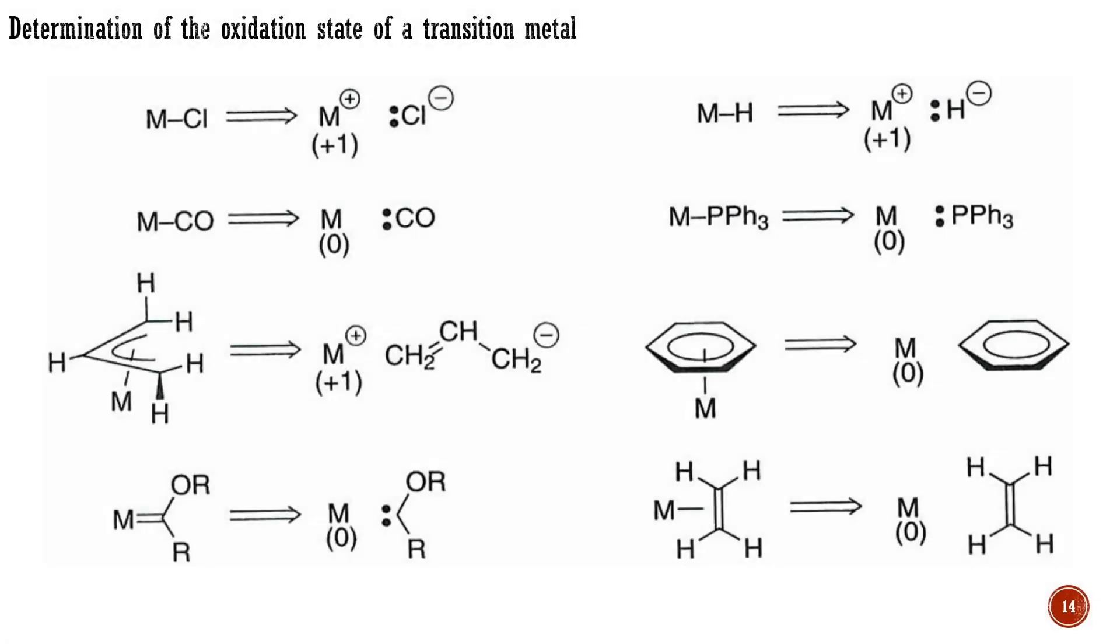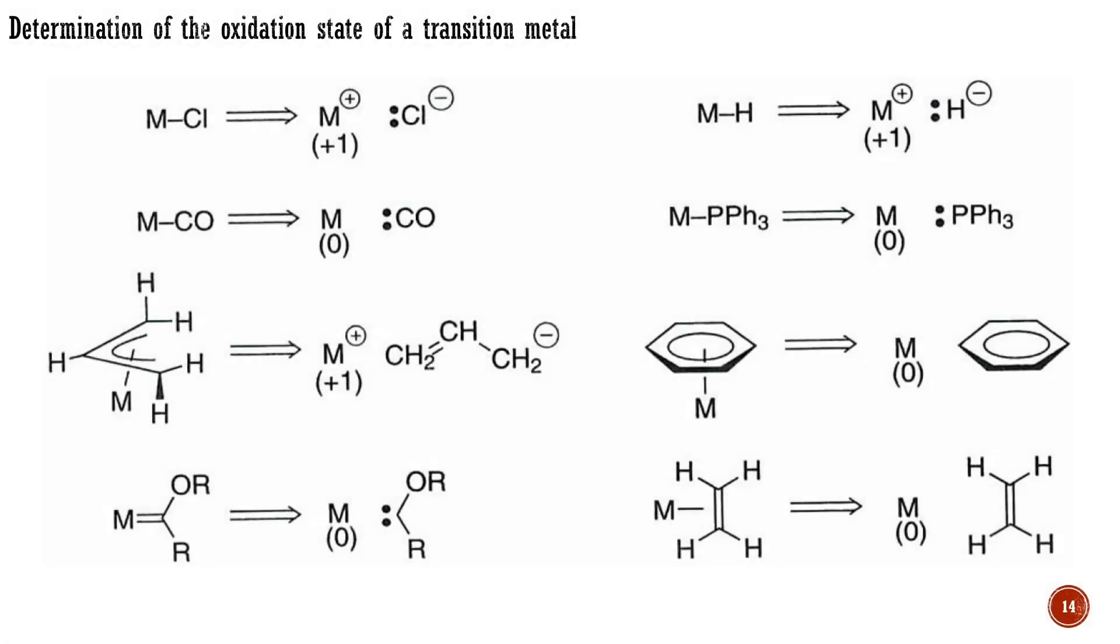The oxidation state of a metal is defined as the charge left on the metal atom after all ligands have been removed in their normal, closed-shell configuration, that is, with their electron pairs. The oxidation state is not a physical property of the metal, and it cannot be measured. It is a formalism that helps us count electrons, but no more. Typical examples are shown here. The chemical properties of the ligands are not always consonant with the oxidation state formalism.